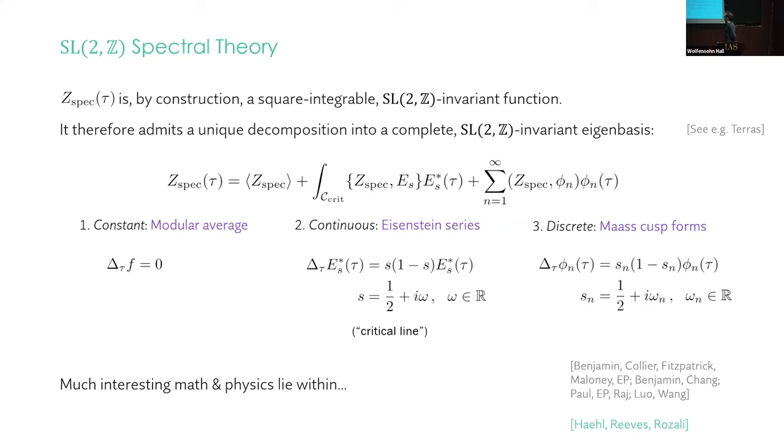So referring to the partition function, now Z_spec is by construction a square integral SL(2,Z) invariant function. It's square integral because we've taken the original partition function subtracted out all the light states, and those are the ones that grow exponentially as you approach the cusp at infinity. And such functions admit a unique decomposition into a complete invariant eigenbasis. The details of which aren't super important because ultimately we're going to go back to the density of states. But just to put this up here, there's a constant piece, there's an Eisenstein series. That's a continuous branch where this is evaluated on the critical line. Whereas this parameter is a half plus i omega. And there's an infinite set of discrete eigenfunctions known as Maass cusp forms.